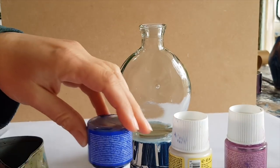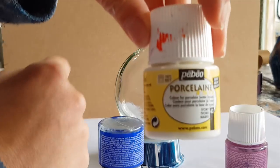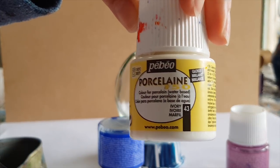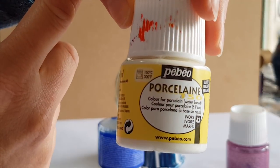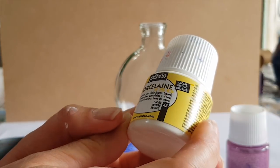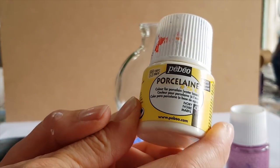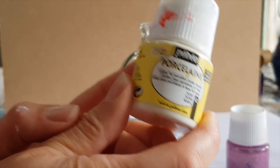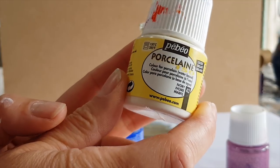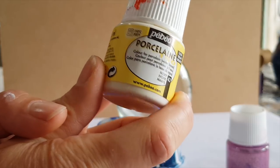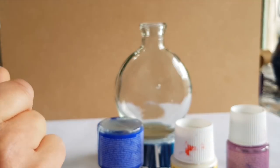What I'm using is this Pebeo Porcelain 150 paint. This is a paint that's been designed to be baked after you've poured it and let it dry for 24 hours, and then it becomes dishwasher safe. My assumption is that if it's dishwasher safe, it must be sit-on-a-bathroom-sink safe.